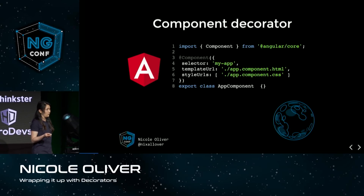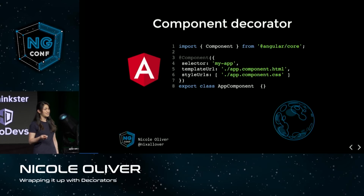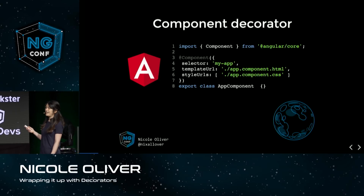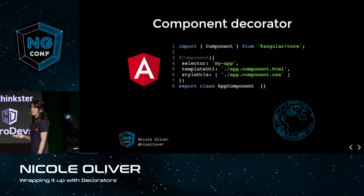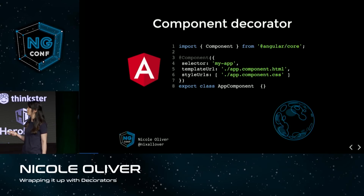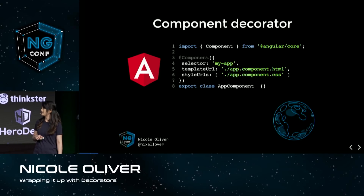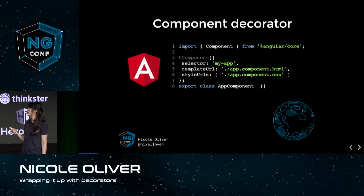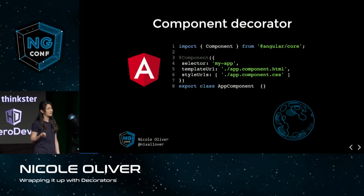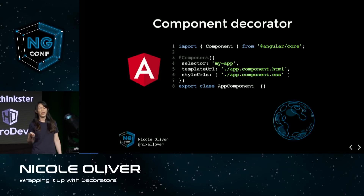How do we know that this is a decorator? The telltale sign is that it's prefixed with an at symbol. Then we have the name of our decorator, component, and we may be passing some arguments into the parentheses after that. And finally, it's placed on top of or in front of whatever we're decorating — in this case, our app component.